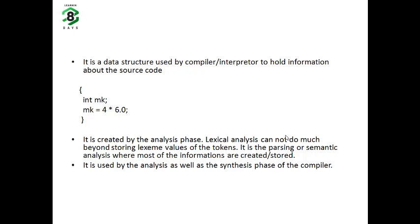For example, here is a code snippet for the programming language C. It starts and ends with curly braces. And inside the braces, there is a declaration of an identifier called MK, and this identifier has been assigned a value. Throughout this discussion, we will refer to this code example to explain some of the key concepts.